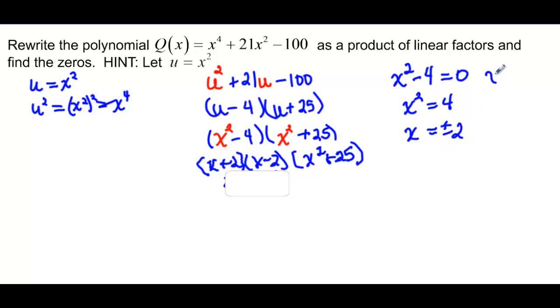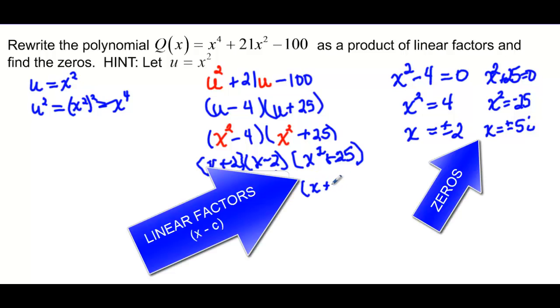And if we take x squared plus 25 equals 0, then we have x squared is equal to negative 25. And x is going to be equal then to plus or minus the square root of 25 would be 5, and the square root of negative 1 will be i. So if we actually came back in here, we could now say x plus 5i and x minus 5i.